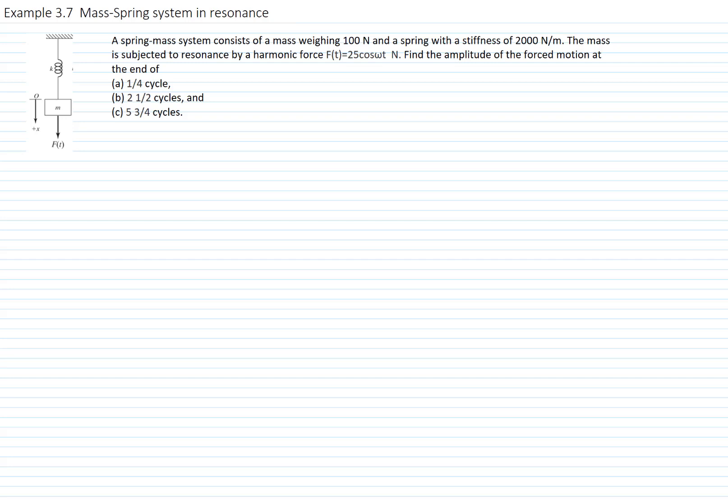This is example 3.7, and we will analyze the response of a mass-spring system that is in resonance. We want to find the response at one quarter of a cycle, at two and a half cycles, and at five three-quarters of a cycle.